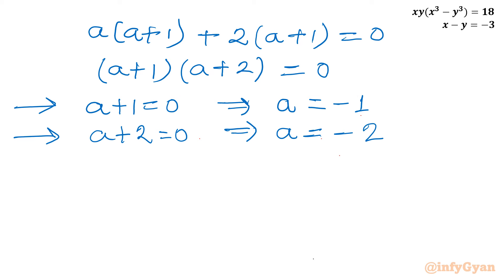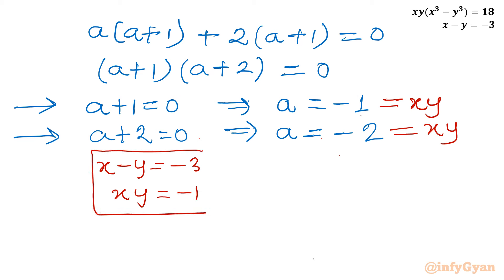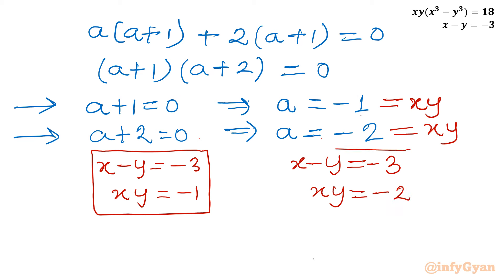This gives us two systems to solve. System 1: x - y = -3 and xy = -1. System 2: x - y = -3 and xy = -2.